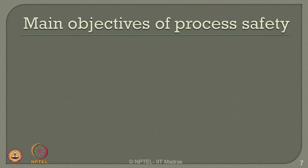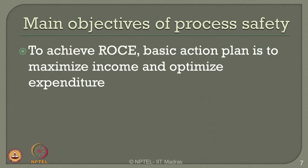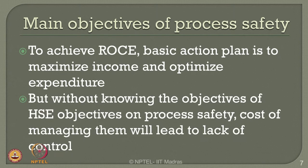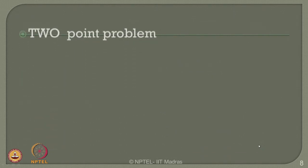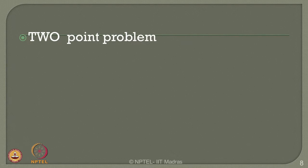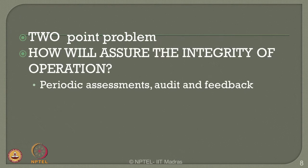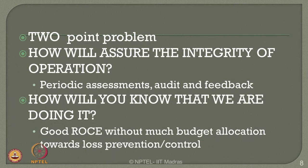What should be the main objectives of process safety? Process safety should essentially focus on return on capital employed. The basic action plan is to maximize income and optimize expenditure. But without knowing the objectives of HSE on process safety, cost of managing them will lead to a lack of control. Therefore, the main objectives of process safety management is a two-façade problem: first, how will you assure the integrity of operation — ensured with periodic assessments, audits and feedback; second, how will you know that we are doing it properly — a good return on investment without much budget allocation towards loss prevention will be a good indicator.